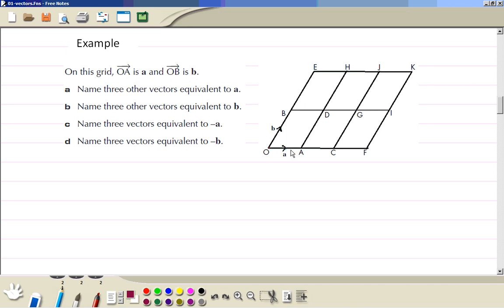Now from O to A is vector a in the horizontal direction. Then O to B is represented by vector b in the slant direction. To answer part a, three other vectors which are equal to a: BD is parallel and exactly the same length, so BD will have the same direction and magnitude. So we write vector BD, or AC is exactly the same length and direction, and CF. There are so many: DG, GI, HJ, EH, all equivalent to a.